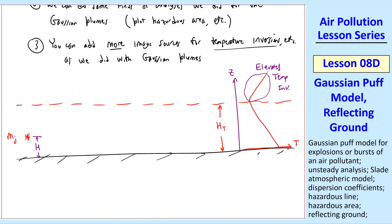Let's suppose we have an elevated temperature inversion with the bottom at height ht. We have our source mj at height h, this explosion off the ground. For an absorbing ground, we put an image source mirror imaged about the temperature inversion bottom, because we have reflections off that, like a lid in the sky. For a reflecting ground, we also add another image source at distance h below the ground.